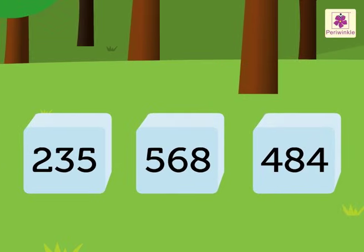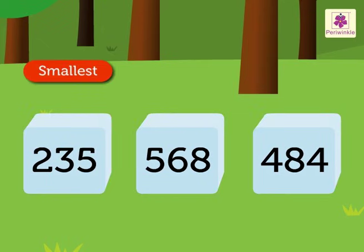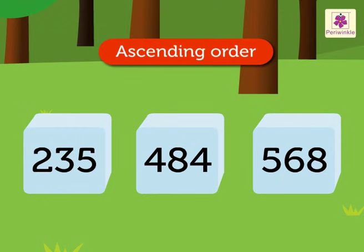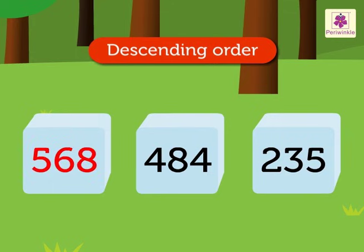Would you like to try once again? Let us arrange the numbers 235, 568, and 484 in ascending and descending order with these sweet sugar cubes. The ascending order is 235, 484, 568. And the descending order is 568, 484, 235.